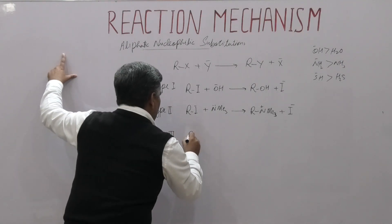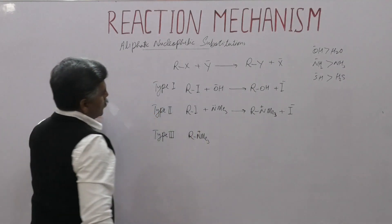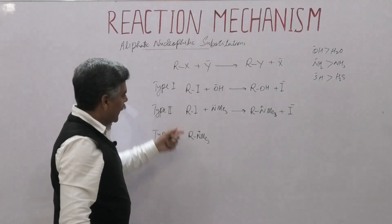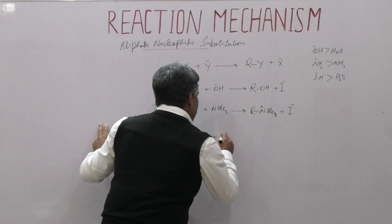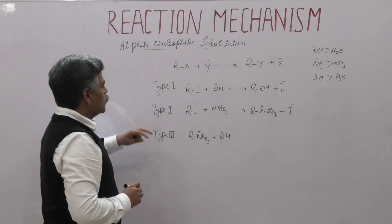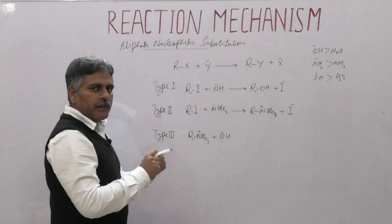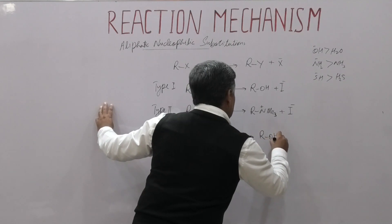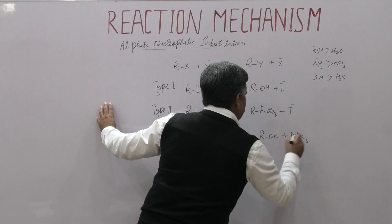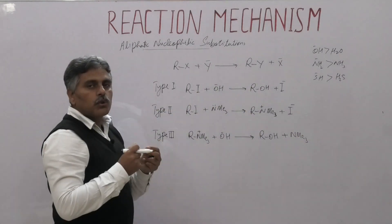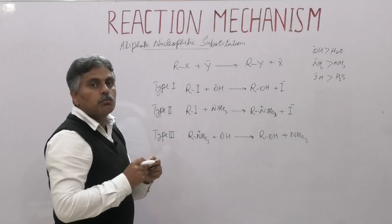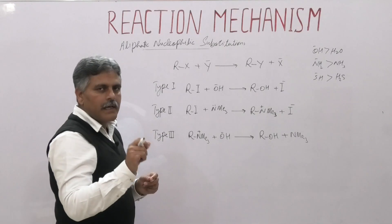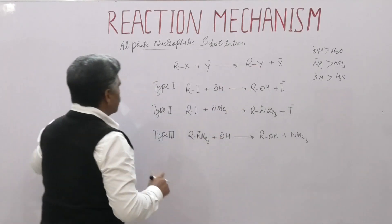Type 3: the substrate R–NMe₃⁺ is positively charged and the attacking nucleophile is negatively charged. So in Type 3, both species — the electrophilic substrate and the nucleophile — are positively and negatively charged respectively, giving the product R–OH plus NMe₃. When the substrate is positively charged it is more electrophilic, just as a negatively charged nucleophile has greater nucleophilicity than its neutral precursor.